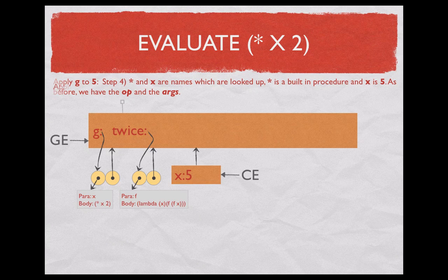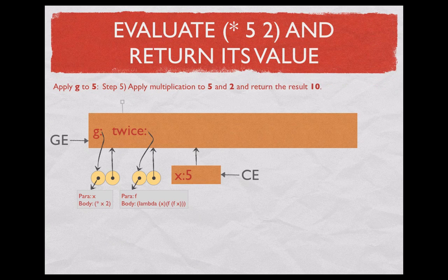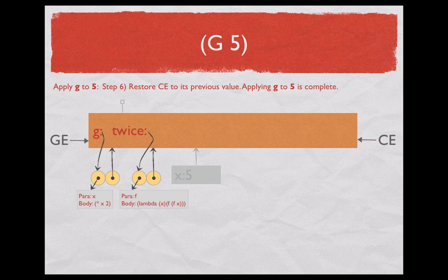The procedure body completes and we don't need the environment we created, so the current environment becomes what it was before. The frame with x=5 just hangs there doing nothing. This is how things look after evaluation of (g 5) has completed.